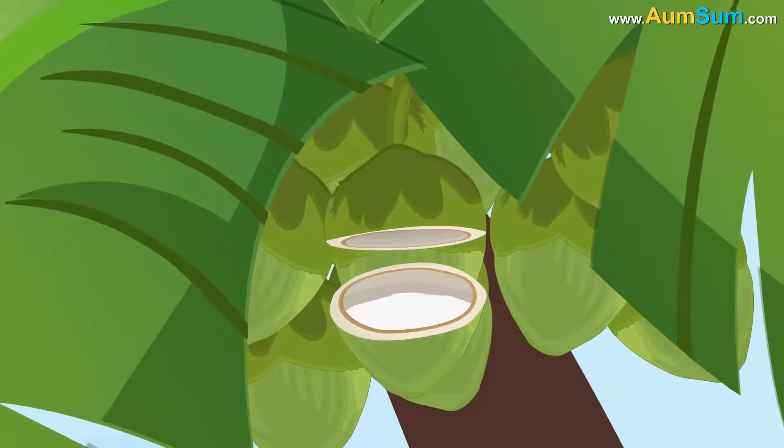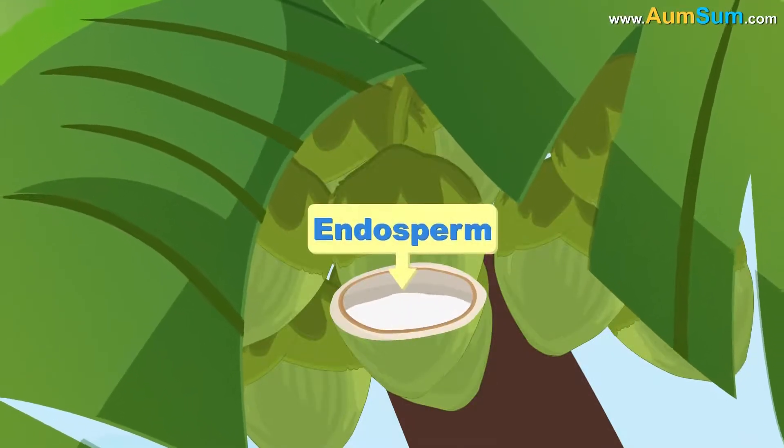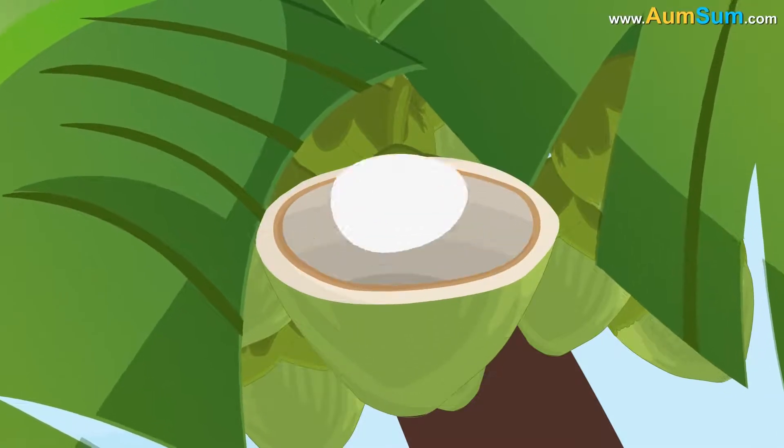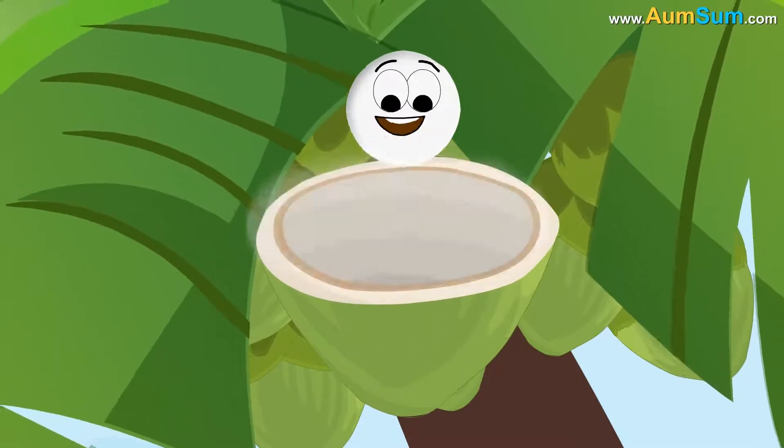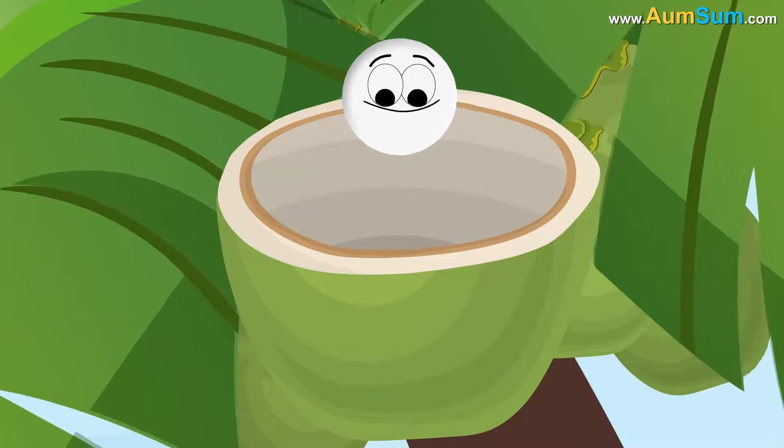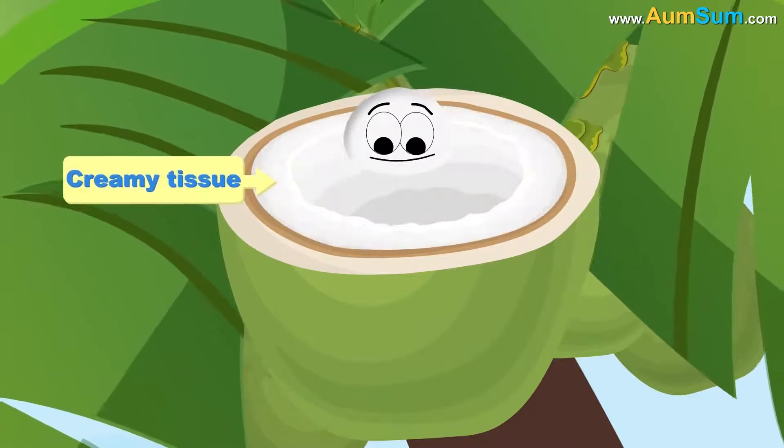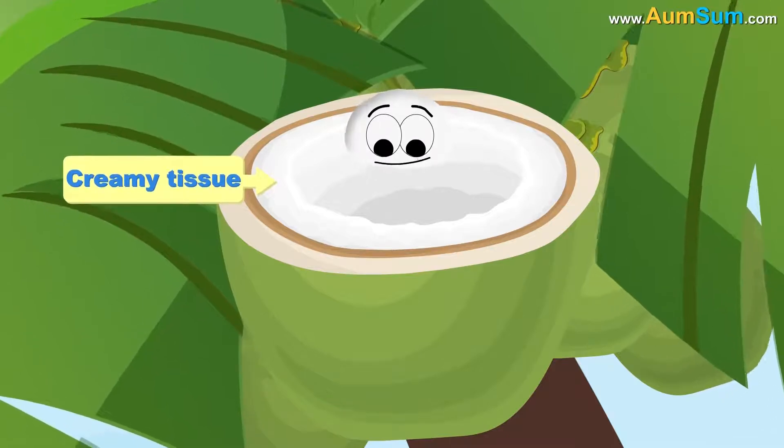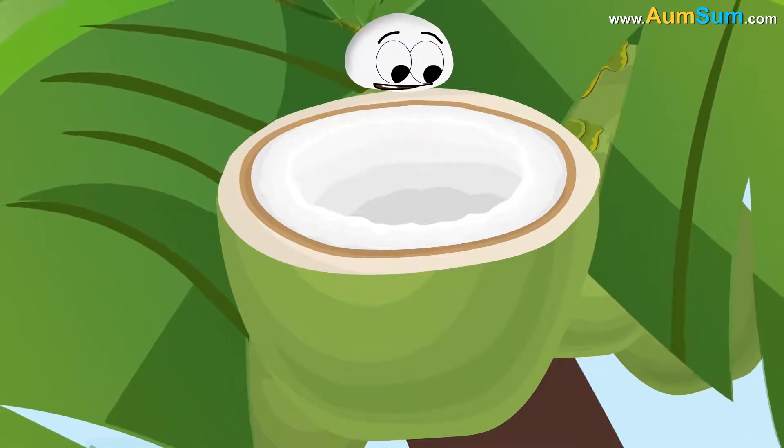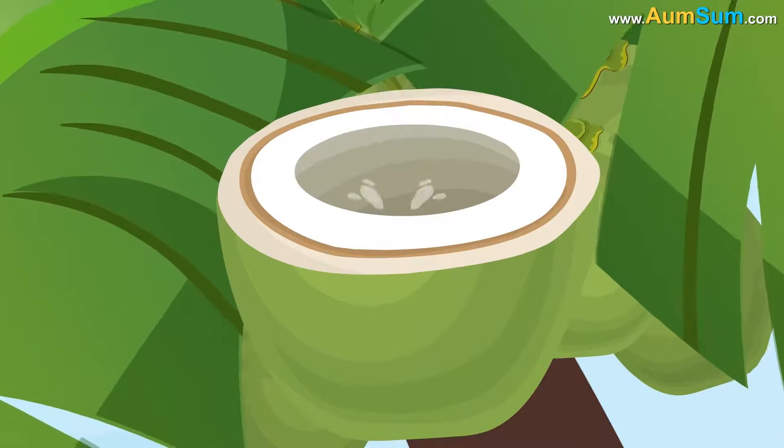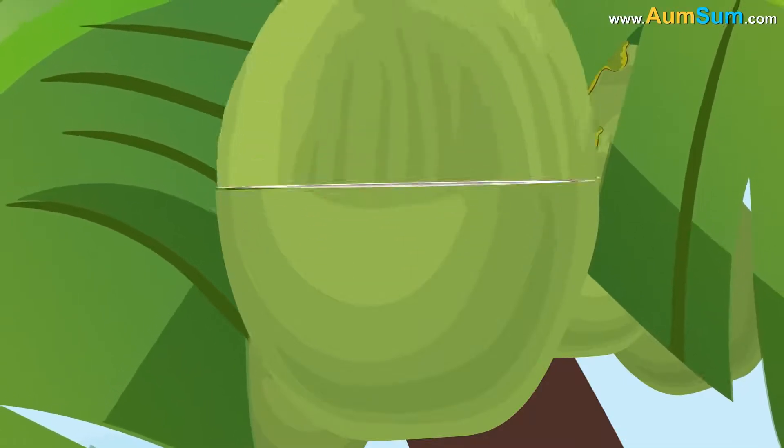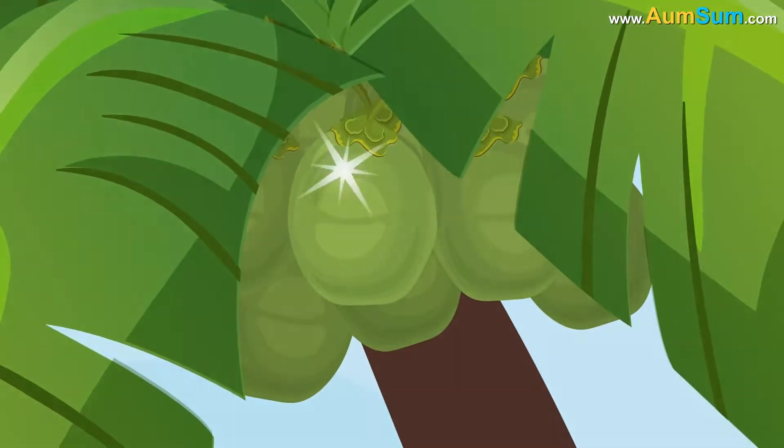The liquid which eventually reaches the coconut is referred to as the endosperm. This endosperm acts as the food or nourishment for the coconut's growth. Now, a part of the endosperm gets converted into a creamy tissue and gets deposited on the coconut's inner surface. Over a period of time, this creamy tissue turns hard and the remaining endosperm ends up as coconut water. So, this is how water ends up inside a coconut.